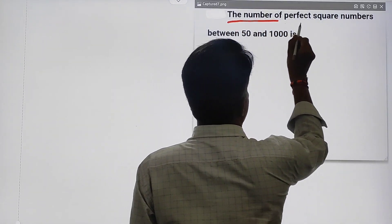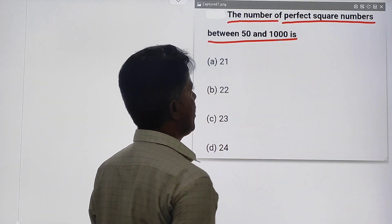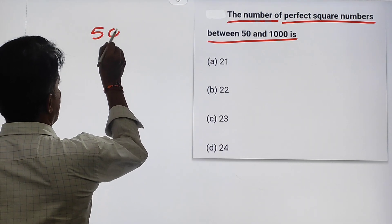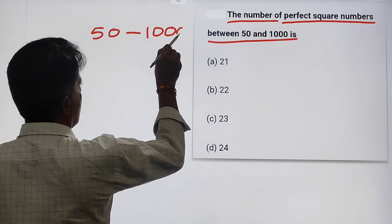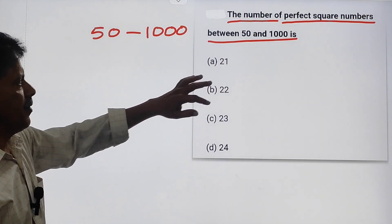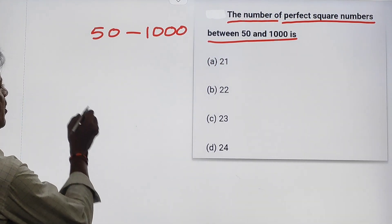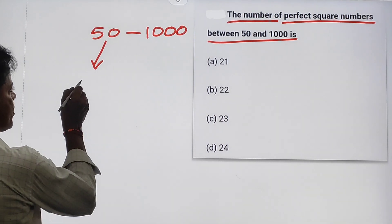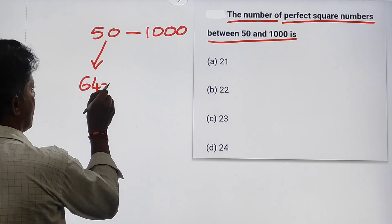The number of perfect square numbers between 50 and 1000. The perfect square number just above 50 is 64, and 64 is 8 squared.